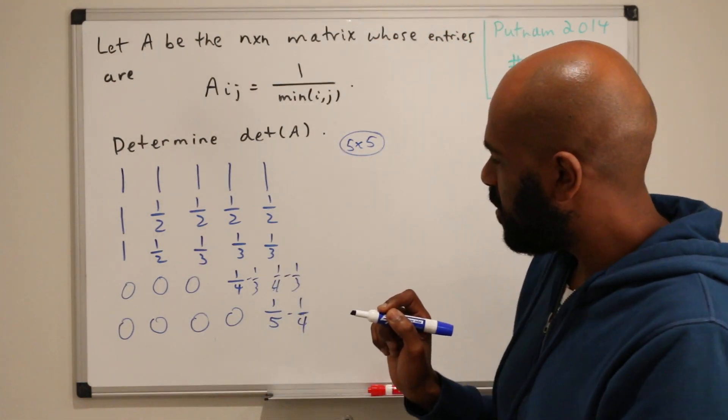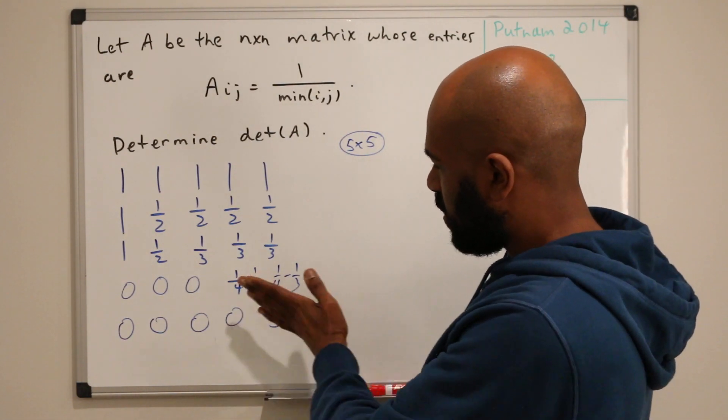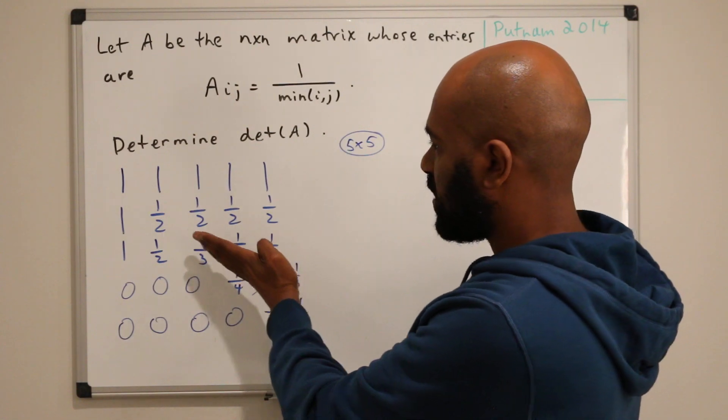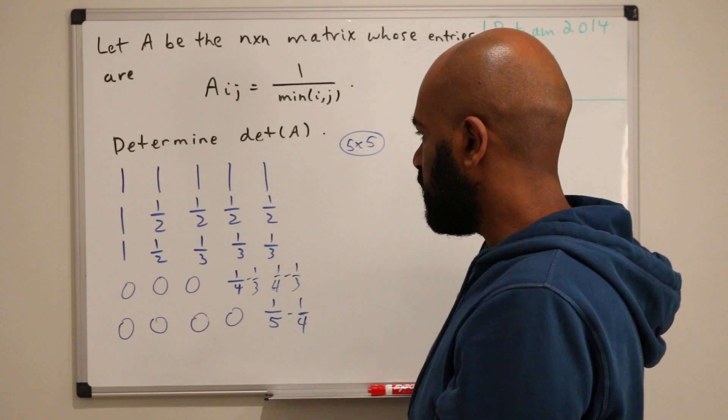Now you might notice a pattern. What we're doing here is making this completely upper, working toward making this upper triangular. And if we take the determinant, it'll be the product of the diagonal entries.